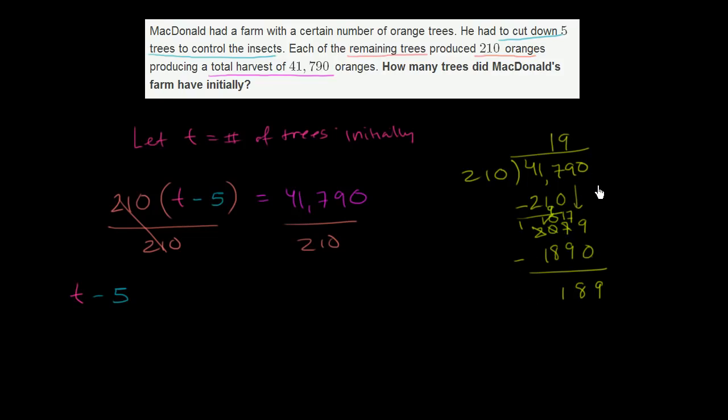And now we can bring down another 0. And we already see that 210 goes into 1,890 nine times. 9 times 210 is 1,890. And we subtract, we have no remainder. So what we get on the right-hand side is 199.